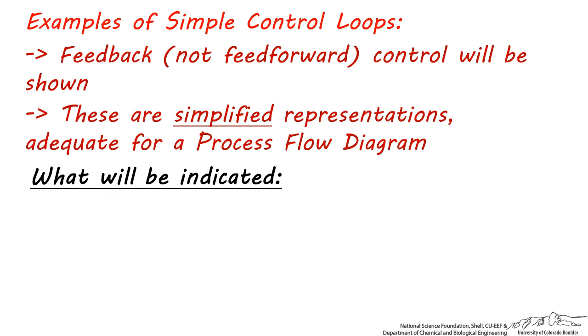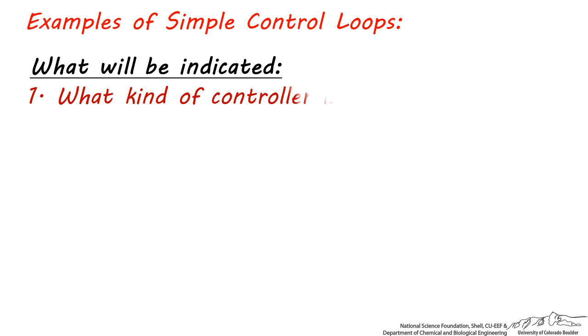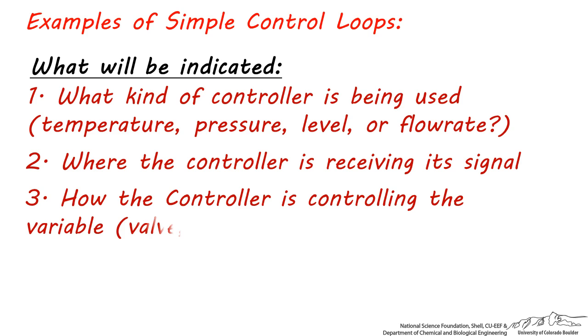Since we're specifying simple control loops, we'll only be indicating three things: what kind of controller is being used, where the controller is receiving its signal, and how the controller is controlling the variable, whether it's by opening and closing a valve, varying the power to a pump or compressor motor, or changing the flow rate of an inlet stream.